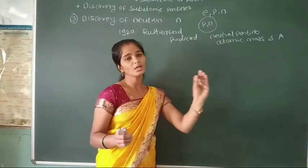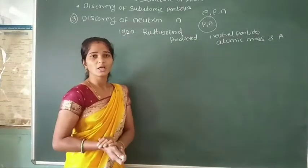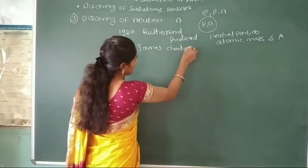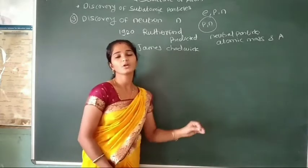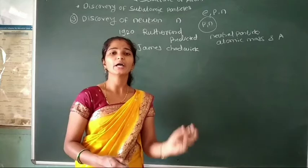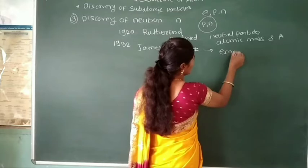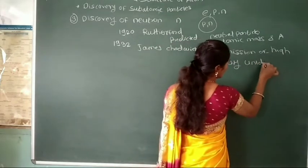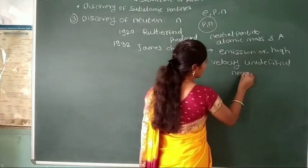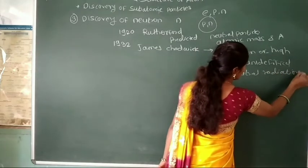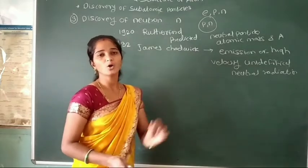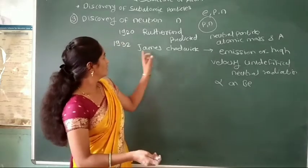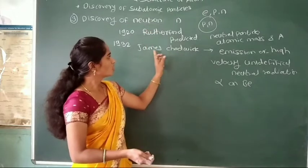Rutherford predicted the presence of neutral particles inside the nucleus on the basis of the difference between atomic mass and atomic number. Then, the discovery of neutrons: in 1932, James Chadwick observed the emission of high-velocity unidentified neutral radiations after bombardment of alpha particles on a beryllium atom. The neutron was discovered by scientist James Chadwick.